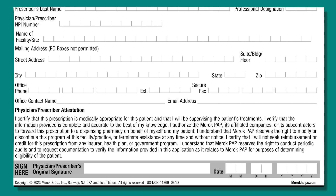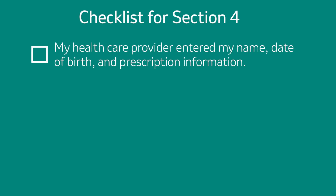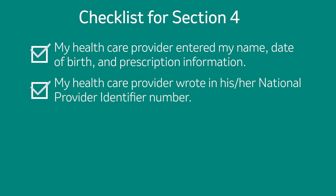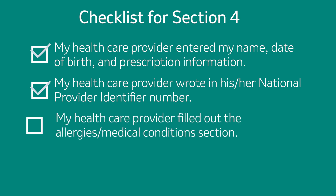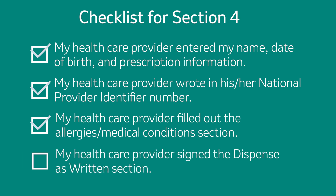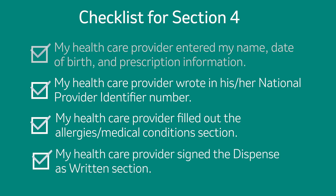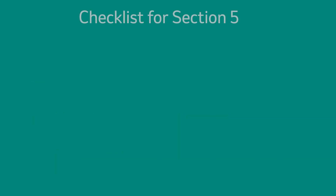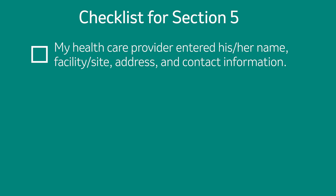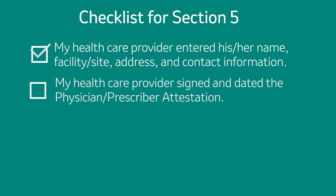Here are checklists for Sections 4 and 5 of the form. For Section 4: my health care provider entered my name, date of birth, and prescription information; wrote in their national provider identifier number; filled out the allergies and medical conditions section; and signed the dispense as written section. For Section 5: my health care provider entered their name, facility or site, address, and contact information; and signed and dated the physician prescriber attestation.